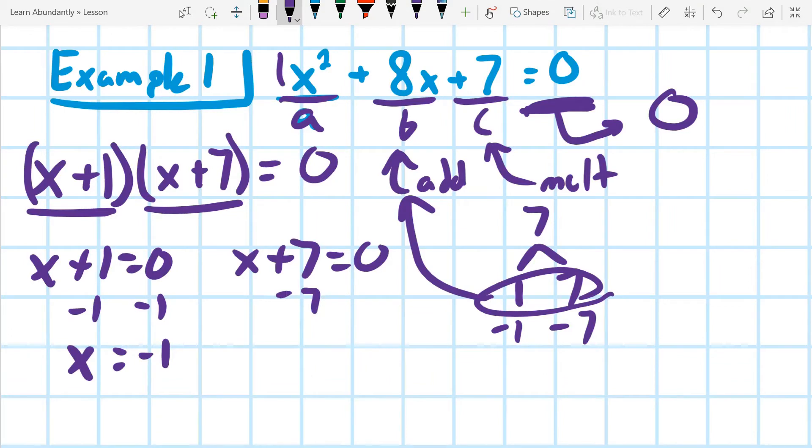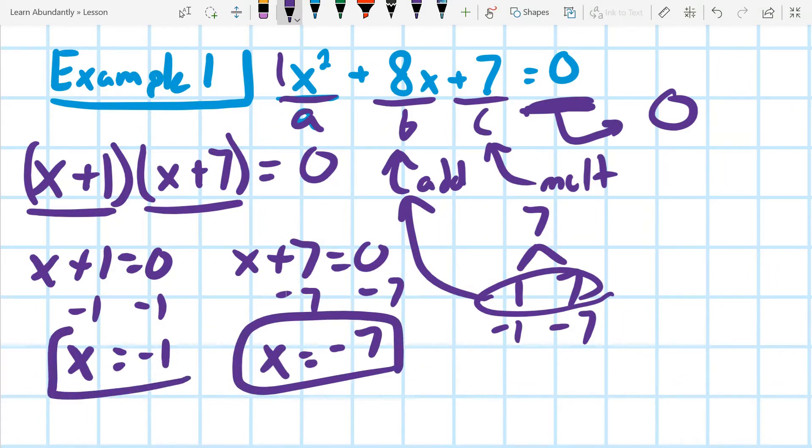Subtract seven from both sides, and I get x equals negative seven. So our answer is actually both of these answers. And we could write it in set notation. That's a really ugly bracket, but we have negative one comma negative seven. It doesn't matter what order they go into, because they're both x's. They're not an x and a y.